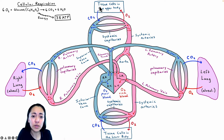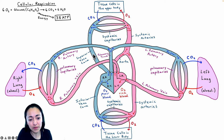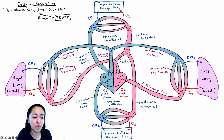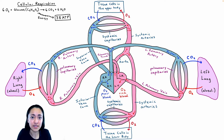That carbon dioxide is going to diffuse out of those tissue cells into our blood and then travel through our blood to the right side of the heart. Our right side of the heart will then pump that blood to our lungs, where that carbon dioxide will leave our blood, enter our lungs, and we will then exhale and breathe out that waste.